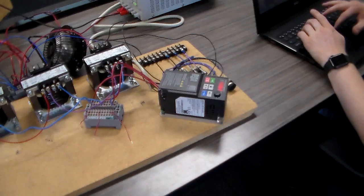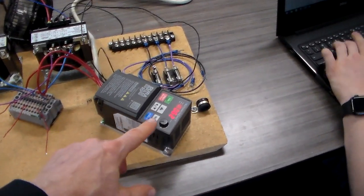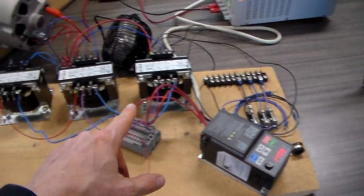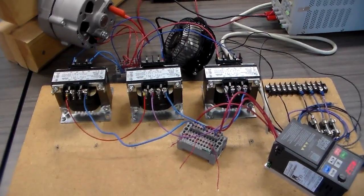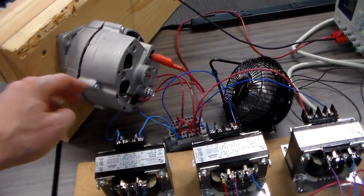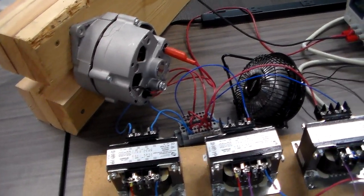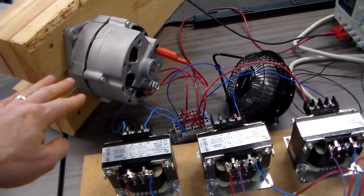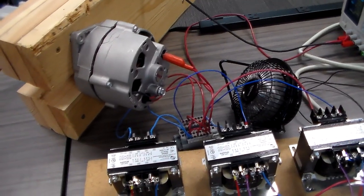What we're doing here is taking line power in to a variable frequency motor drive, stepping its output voltage down through a bank of three-phase transformers to a voltage level suitable for our Delco motor, which is somewhere around the neighborhood of 8 volts AC at 60 Hz.